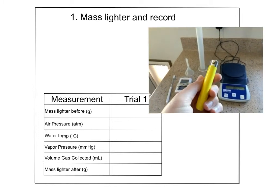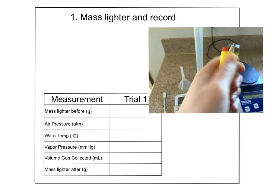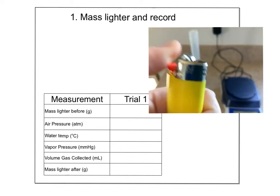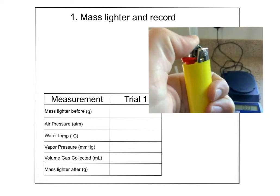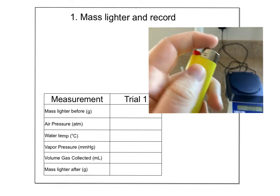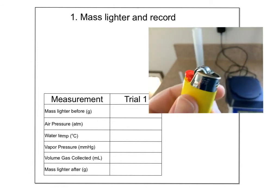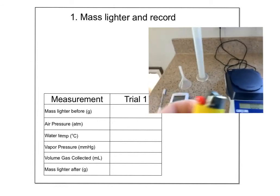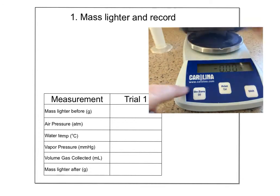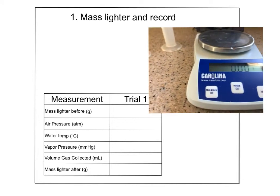I went to the store and got a lighter that we're actually going to use. The red button releases the gas — I'm just going to push that, not the striker, since I definitely don't want an underwater flame. Step one: zero the balance and get the starting mass of the lighter. The lighter before: 21.49 grams.